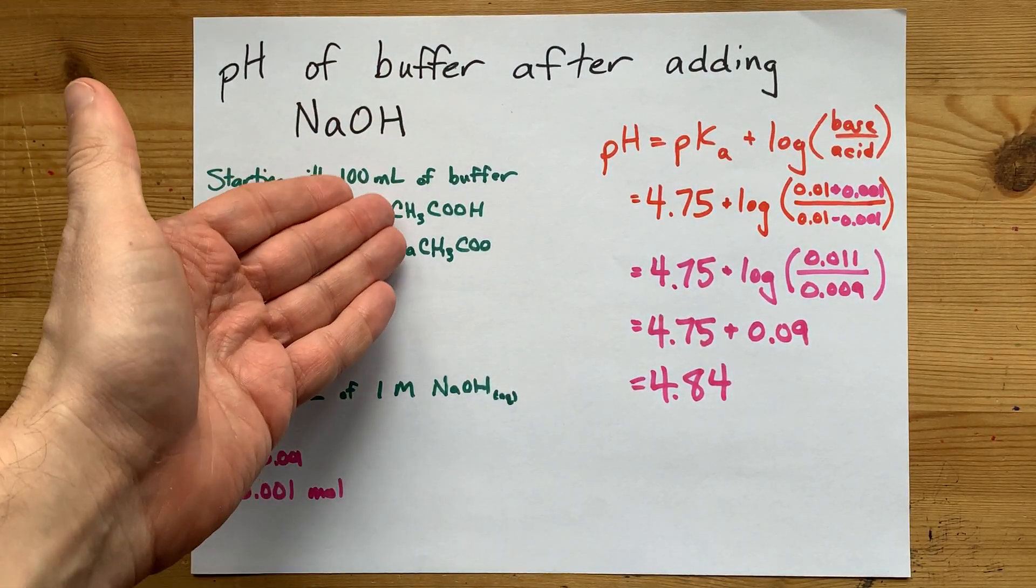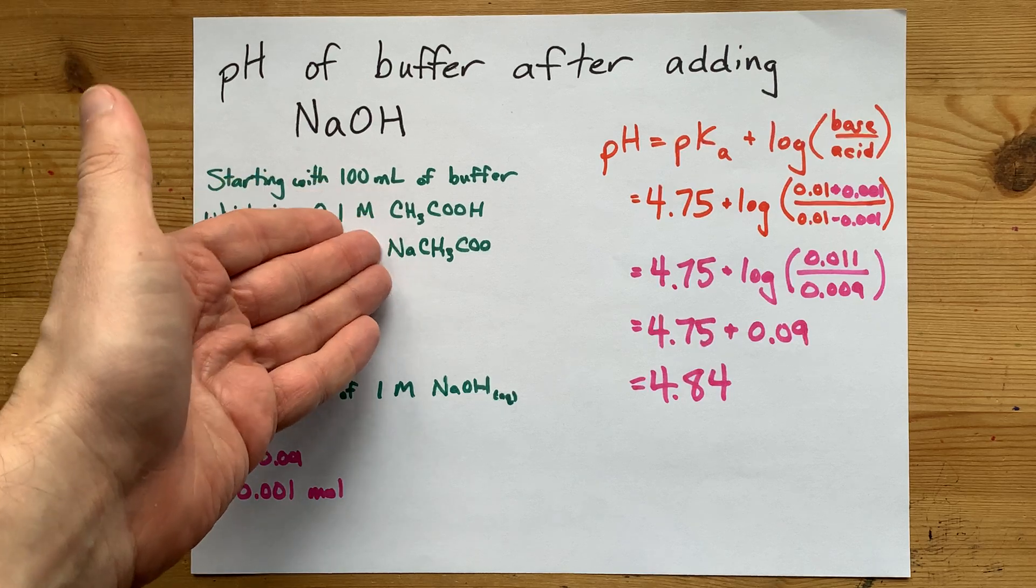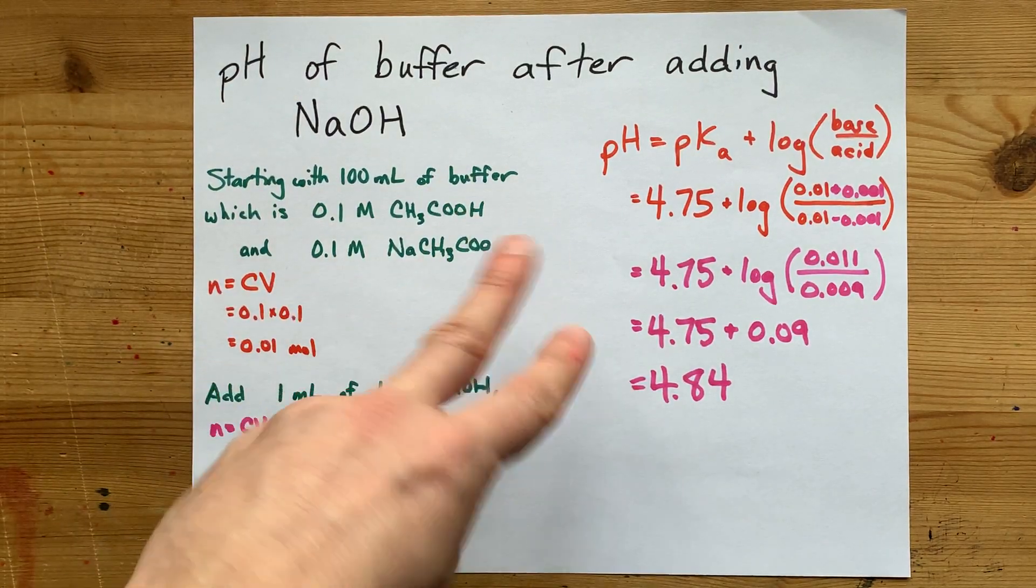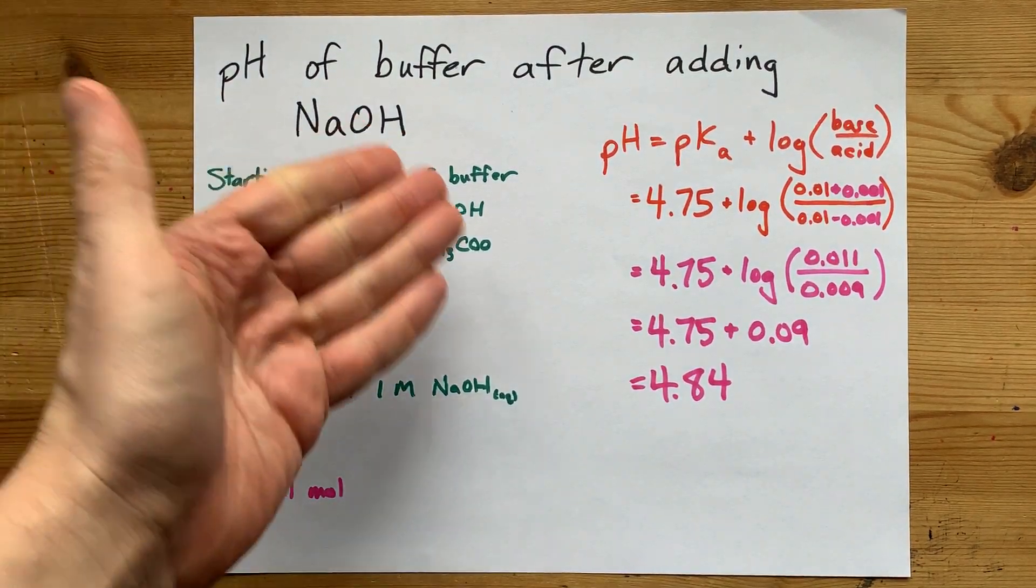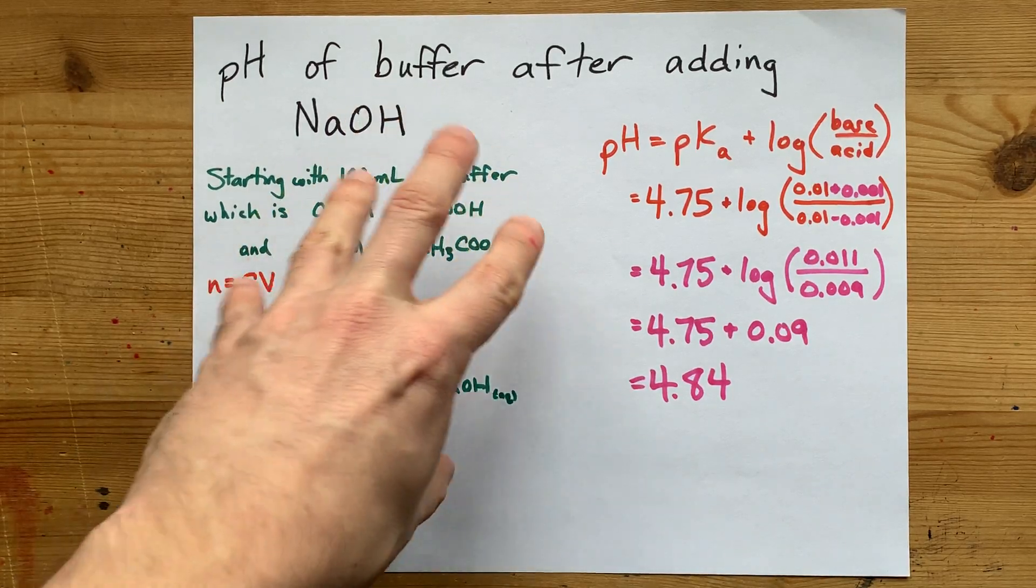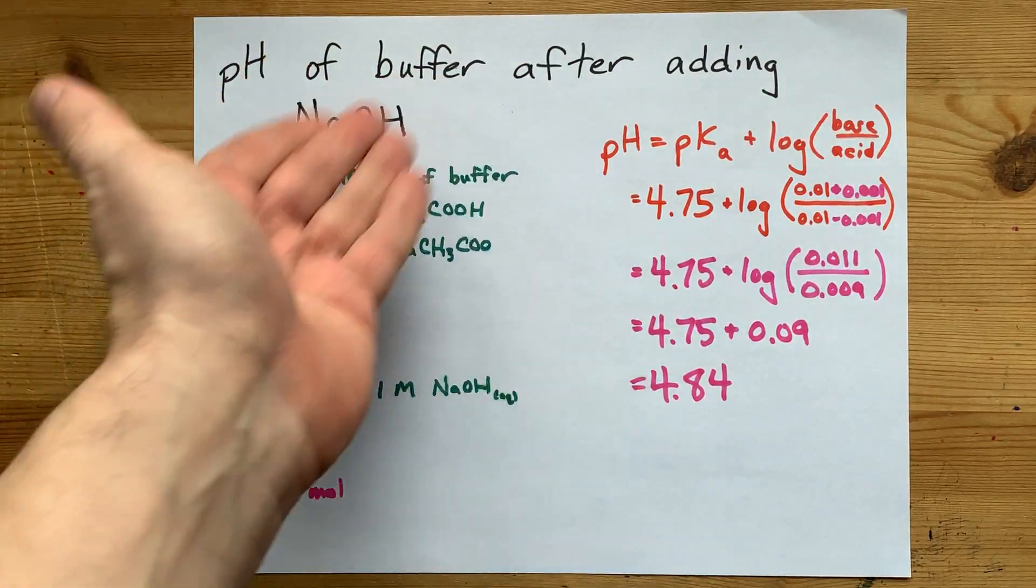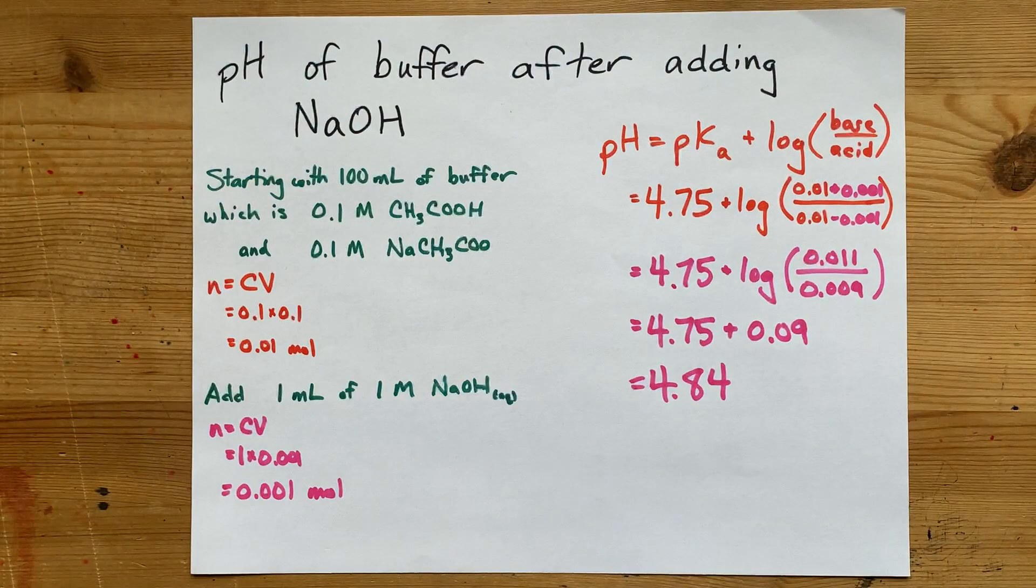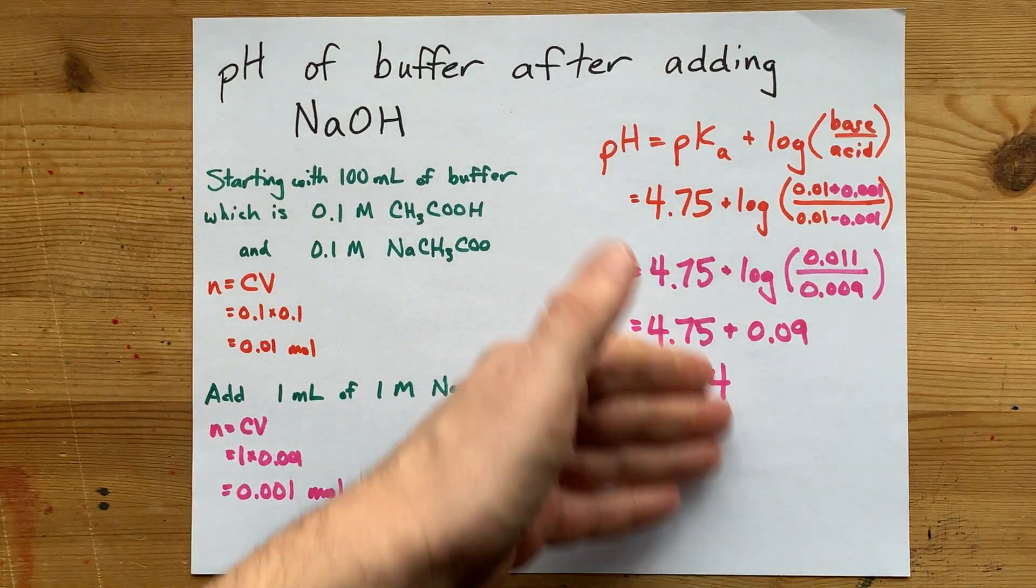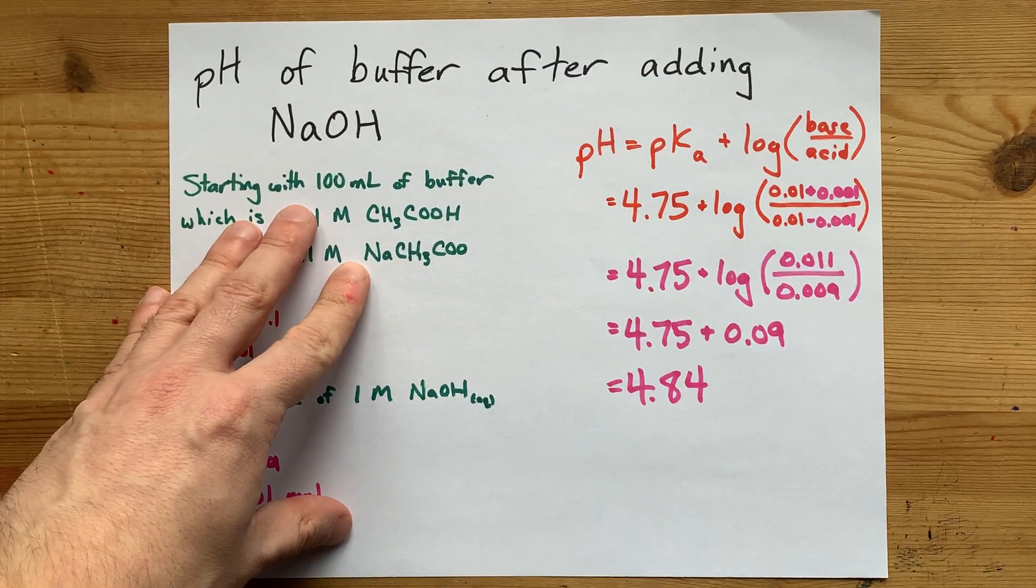Buffers, by definition, have some conjugate acid and base, a conjugate acid-base pair in it, so that it can absorb and re-equilibrate to kind of temper changes that in pure water would have been much more jarring. That's the moral of the story here. Thanks for being with me, and best of luck. I'll see you next time.